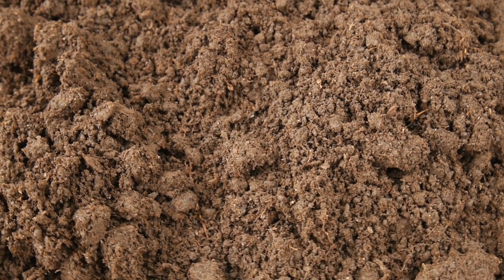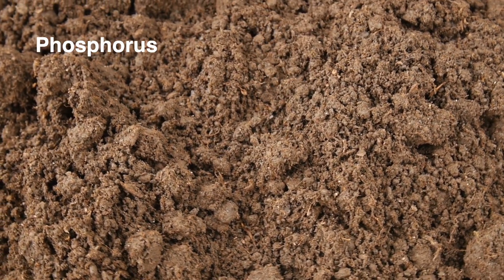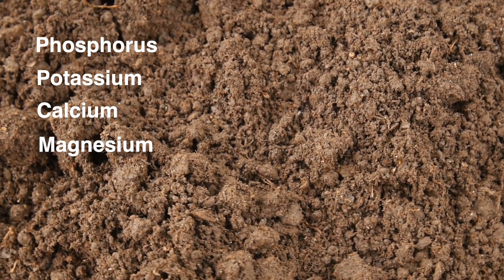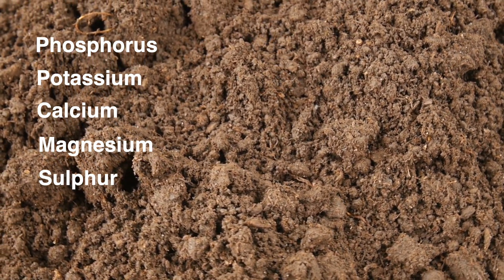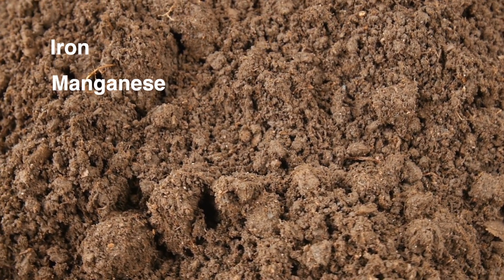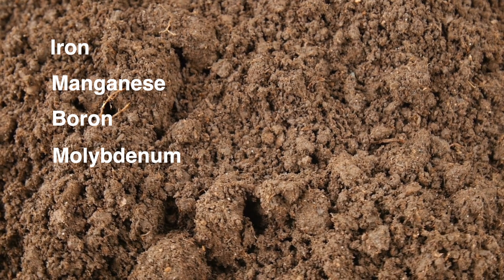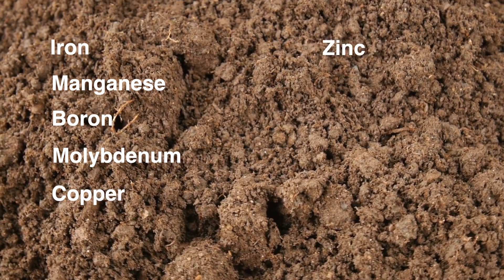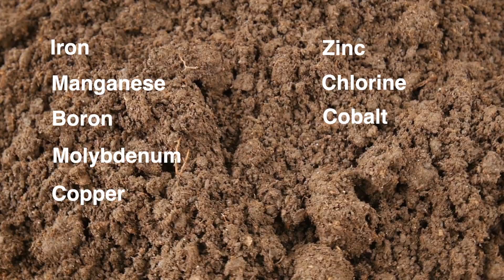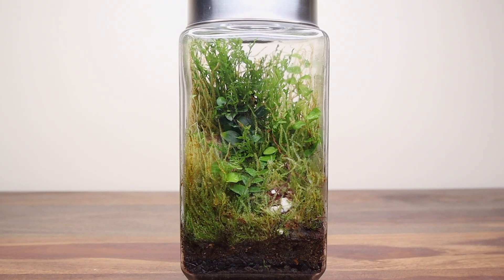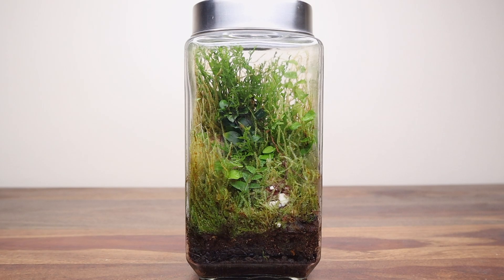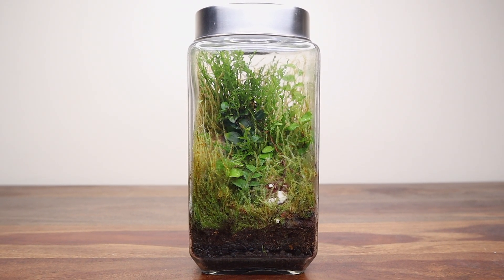The soil also supplies other macronutrients like phosphorus, potassium, calcium, magnesium, and sulfur to the plants. In relatively small amounts, the soil also supplies micronutrients such as iron, manganese, boron, molybdenum, copper, zinc, chlorine, and cobalt. These nutrients are absorbed by the plants, and again when they shed leaves, some of the nutrients are returned back to the soil and the cycle continues.